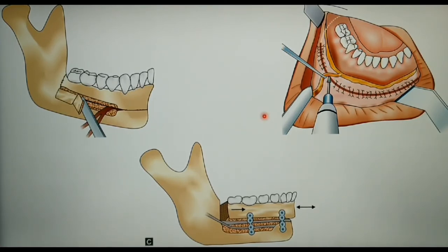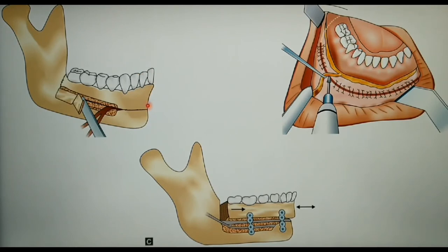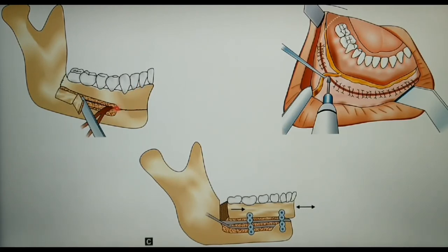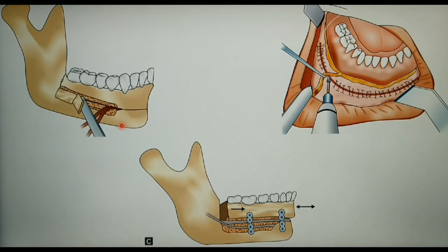The same procedure is repeated on the other side as well. A minimum of 4mm of bone should remain below the teeth apices — that is, the distance from the teeth apices to the osteotomy should be at least 4-5mm. The distance from the osteotomy cut to the inferior border should be at least 10mm.